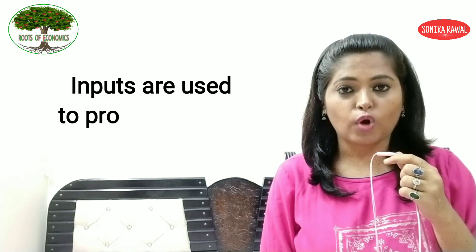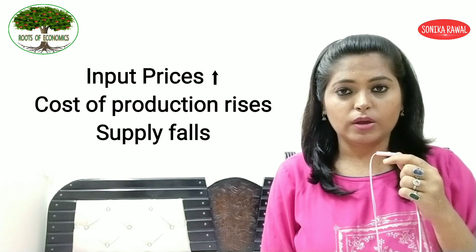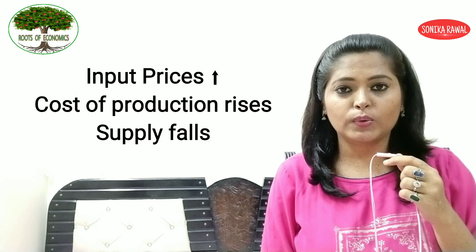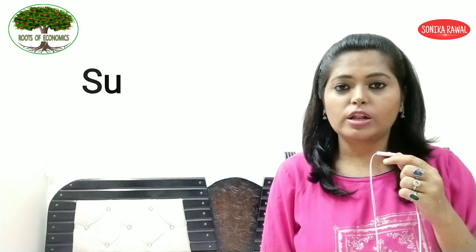Next reason is fall in the availability of basic inputs। कुछ भी output बनाने के लिए raw materials यानी inputs use करने पड़ते हैं। Inputs की availability fall कर रही है, easily inputs नहीं मिल रहे, तो inputs के prices बढ़ने start हो जाते हैं। आपकी cost of production बढ़ जाती है, आप supply को कम कर देते हो, और अगर input prices में increase हो जाता है तो यह भी increase in cost of production का part है। Again, supply fall होगी और prices rise होंगे।